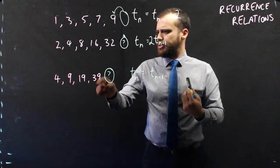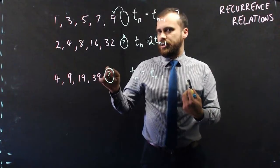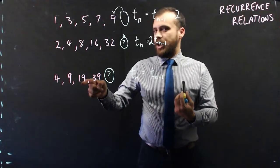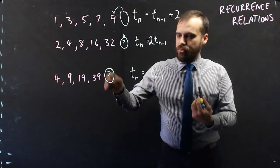4, 9, 19, 39. If I double 4, I get 8, and then if I add 1, I'll get 9. If I double 9 and add 1, 18 plus 1 is 19. Double, add 1, 39.